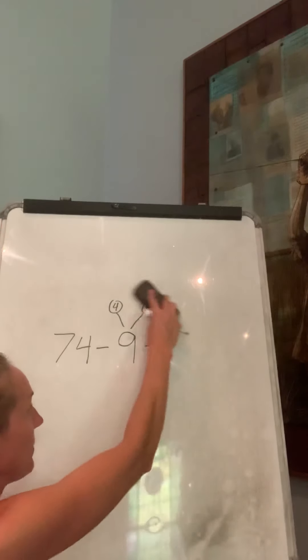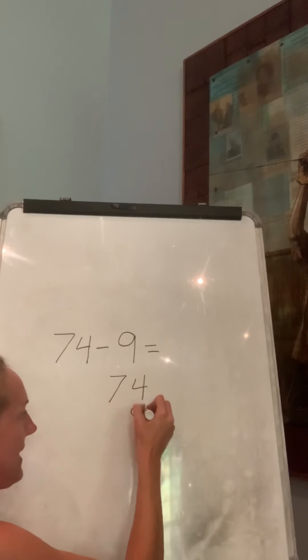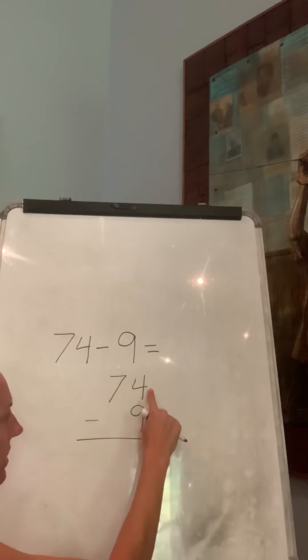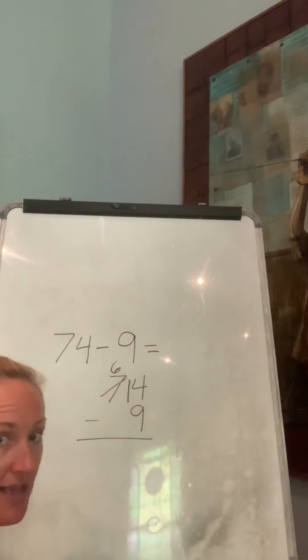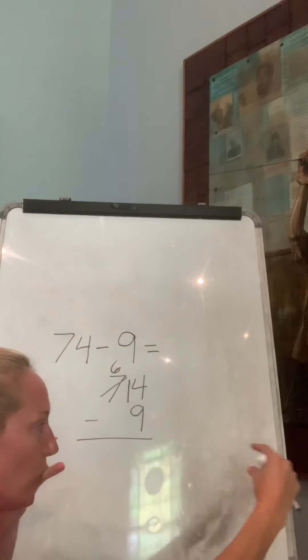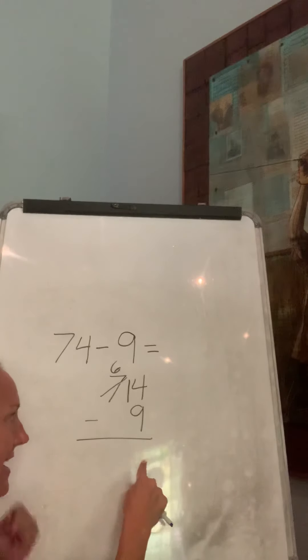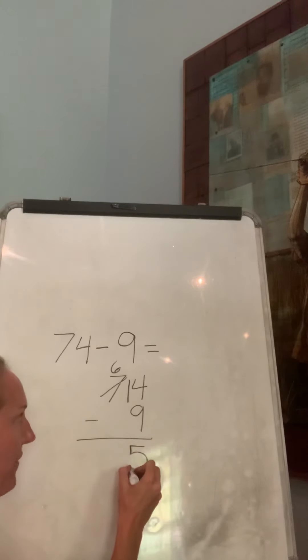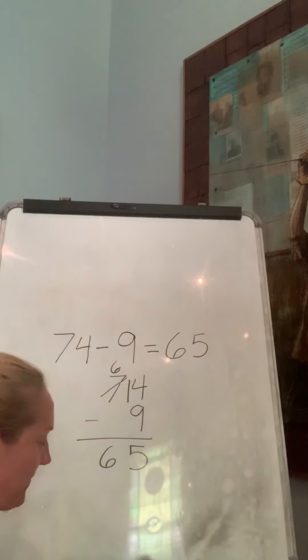Your choice. But you could also put them on top of each other. 74 minus 9. Is 4 bigger than 9? No. Got to make it bigger. What is 14 minus 9? Now, if you don't know that math fact, you can use a number line, your ruler, the numbers on the ruler. Start at 14 and go backwards 9 hops and you'll land at 5. 6 minus 0 is 6. Did we get the same answer? Yeah. It's just a different strategy.